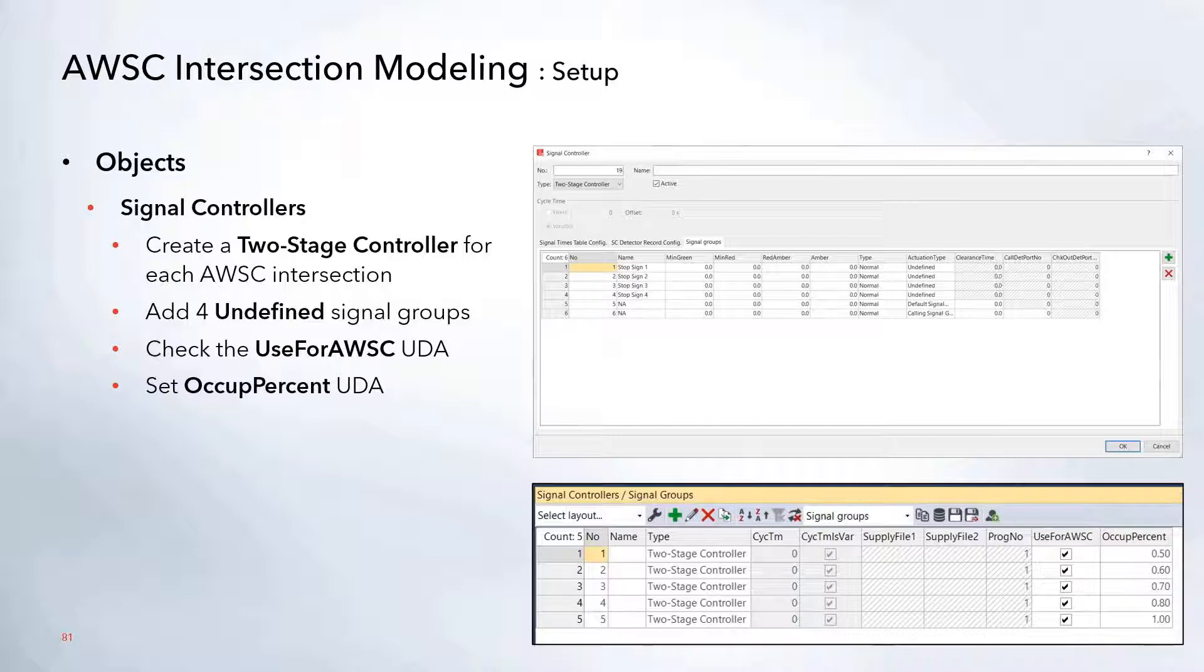As far as additional objects go, the first thing here is adding in a signal controller for each of the intersections. So in this case, we just took advantage of that internal two-stage controller. In this case, we actually changed the actuation type here just to undefined because these signal groups will be set based on the COM script. So I just added in four new undefined signal groups.